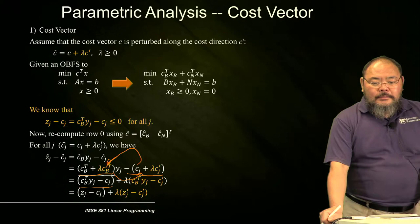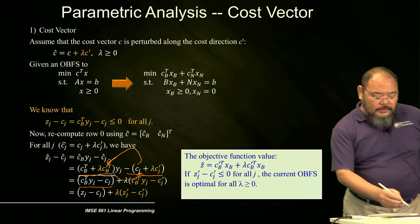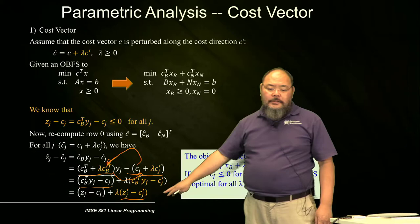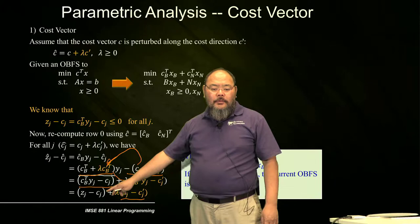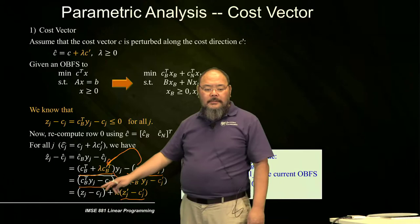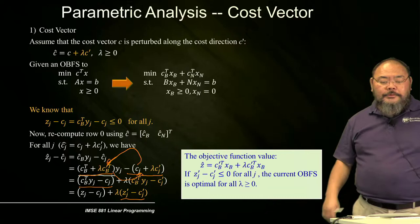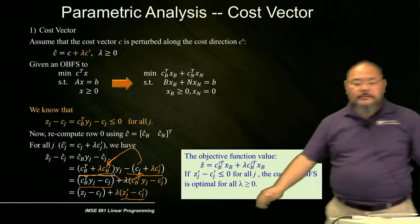If Z_prime_J minus C_prime_J is less than or equal to zero for all J, then since the original ZJ minus CJ at optimality is already non-positive, adding a positive lambda times a negative term keeps the result negative. So the current tableau remains optimal regardless of how large lambda is.